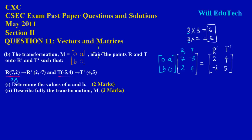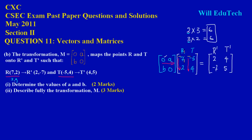When multiplying matrices, you multiply row by column. I take the top row and multiply it across the first column going down, then use that same top row to multiply the second column. Then I repeat the procedure using the bottom row [B, 0].